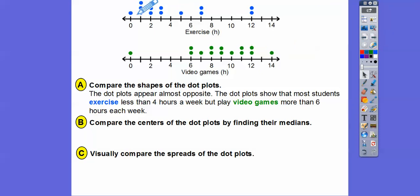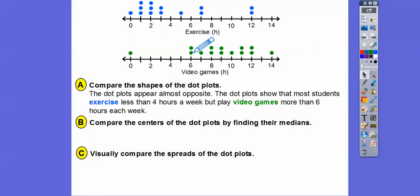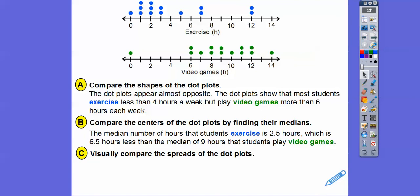Compare the centers of the dot plots and find their medians. With 14 data points, the median is between the 7th and 8th numbers. Counting to the 7th and 8th values: for exercise, it falls between 2 and 3, so the median is 2.5 hours. For video games, also 15 students, counting to the 7th and 8th gives a median of 9 hours. So the median number of hours students exercise is 2.5, which is 6.5 hours less than the median for video games at 9 hours.